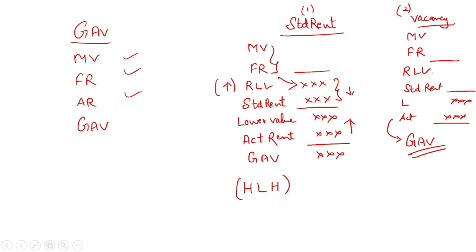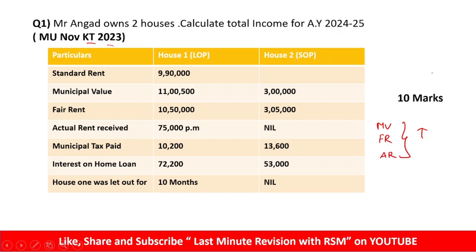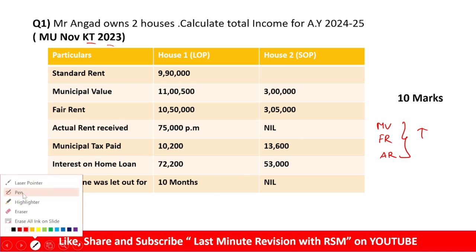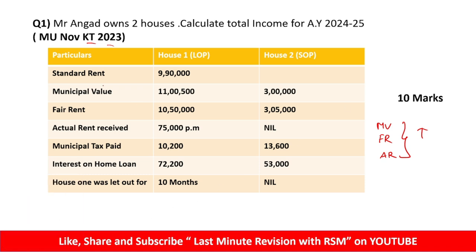Let's go directly to Question Number 1. This was asked in the previous year's paper and carried 10 marks. First of all, you should identify where Standard Rent is given in the question.